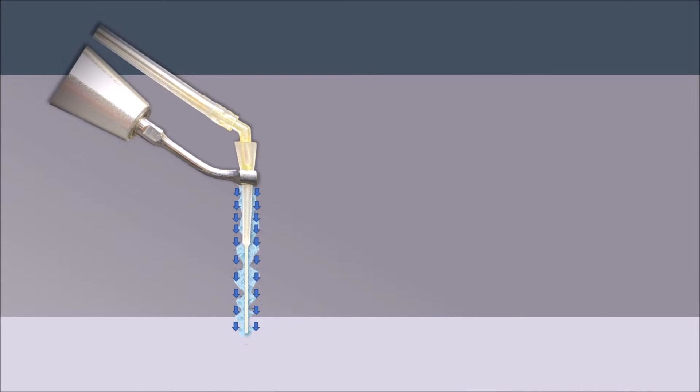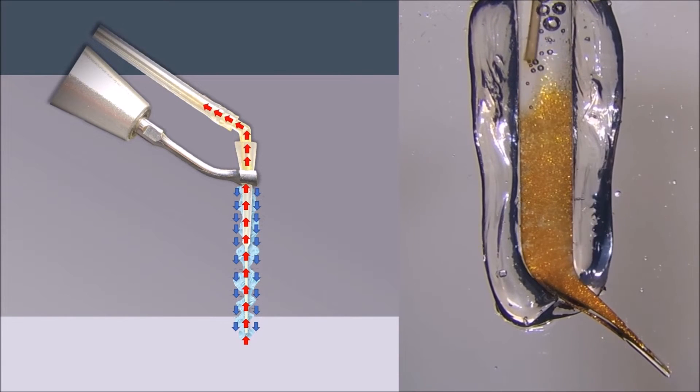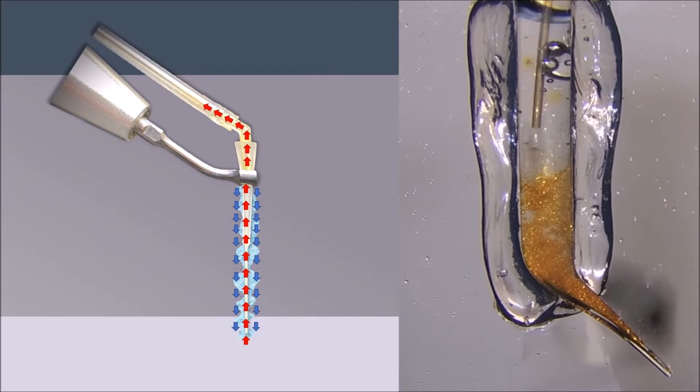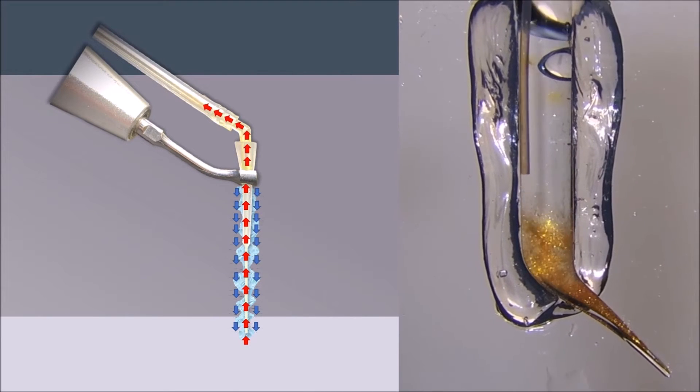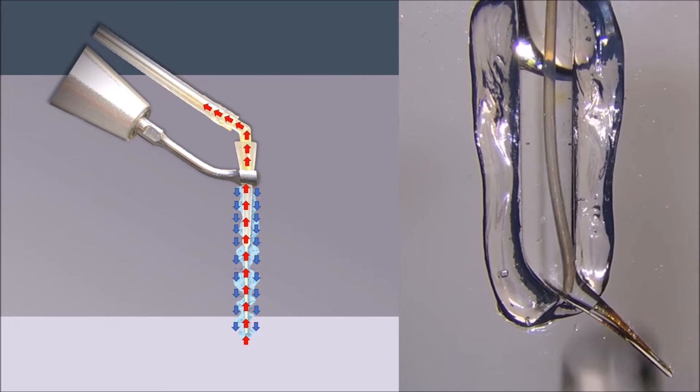The system features continuous flush irrigation, providing an uninterrupted supply of fresh solution during the procedure. Using a polymer cannula, the iVac has the advantage of ultrasonically activating the solution without the risk of fracture as metallic inserts present when using PUI. Furthermore, the chances of separating the cannula within the canal are low if any.